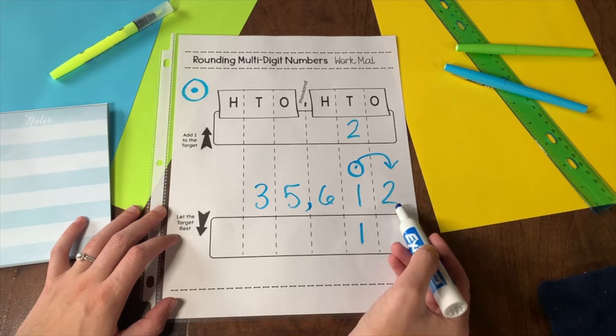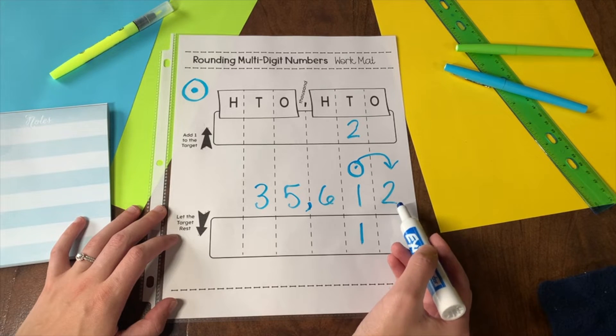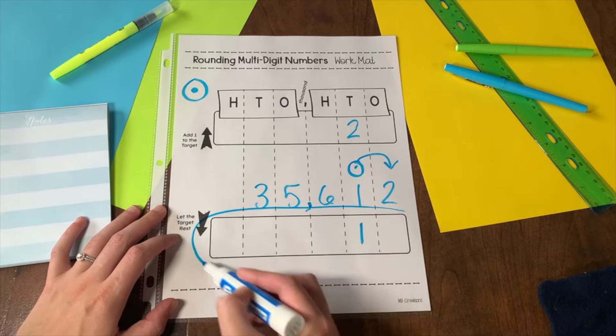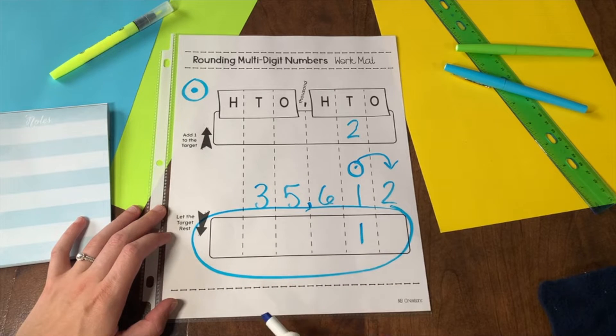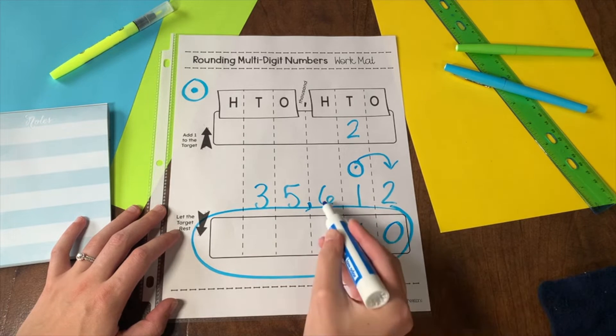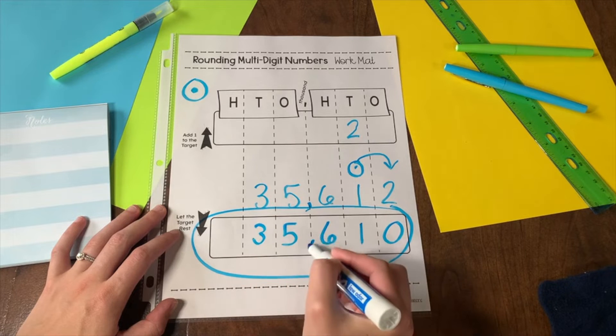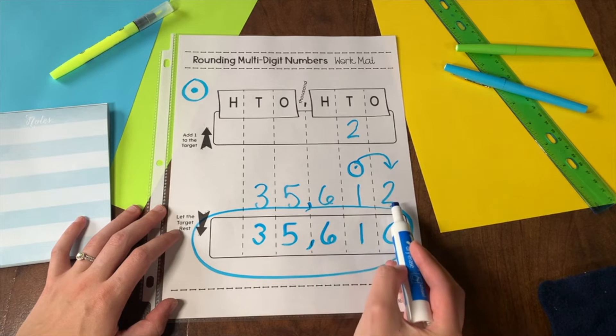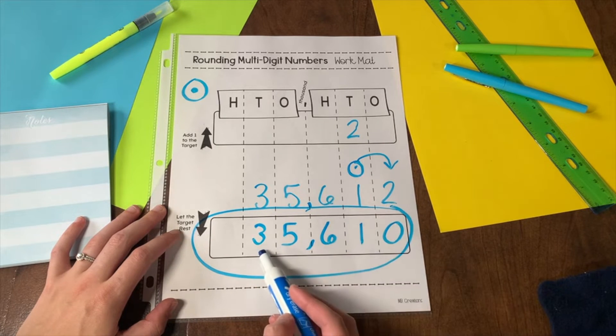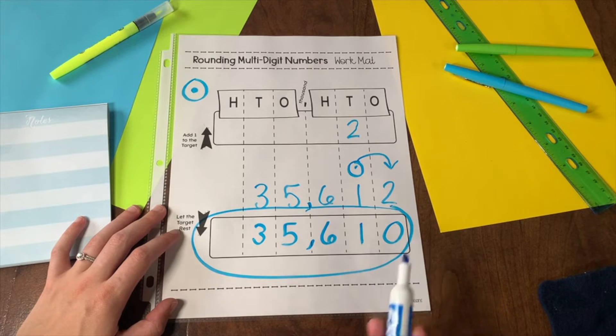A 2 is a pretty low number. It's not very close to the next 10. In this case, I will be rounding down. This means that everything behind my target becomes zero and everything in front of my target stays the same. 35,612 rounds to 35,610 when rounding to the tens place.